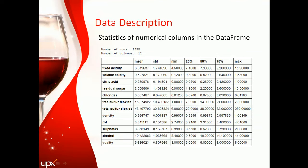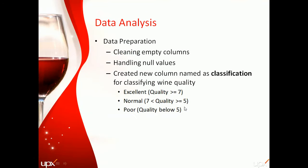Now the third agenda — data analysis. We first start with data preparation where we clean the null values and null columns. As per requirement, we create a column named classification where we decide a range for the quality numbers: if it is more than seven we assign it as excellent category, if it is between five and seven we assign it as normal, and if it is below five we assign the wine as poor quality.